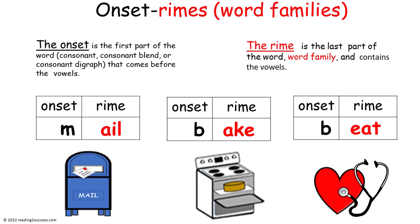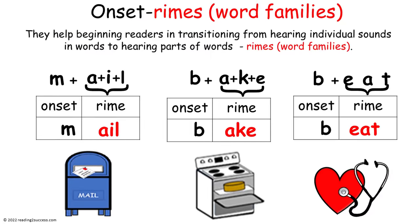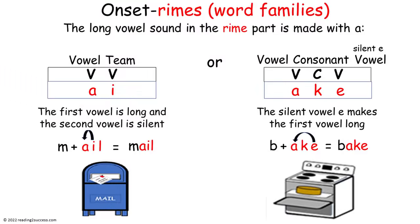The onset is the first part of the word. It can be a consonant, consonant blend, or a consonant diagraph that comes before the vowels. Changing the onset changes the word. Onset rhymes help beginning readers in transitioning from hearing individual sounds in words to hearing parts of words. The long vowel sound in the rhyme part of a word is made with a vowel team known as VV, or a vowel consonant silent E vowel known as VCV.